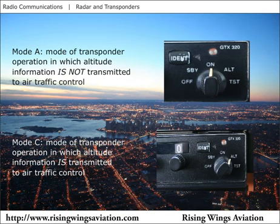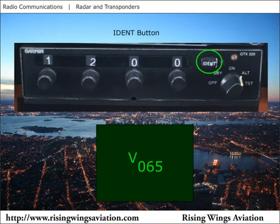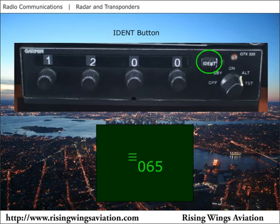The phrase "squawk standby" is an instruction to place the transponder in the standby position, in which case it will not reply to air traffic control radar. When the pilot presses the IDENT button on the transponder, the transponder sends an IDENT signal to the secondary radar system. The radar display momentarily changes the look of the secondary radar target, allowing the air traffic controller to verify the location of an aircraft. Press the IDENT button when requested to do so by air traffic control — for example, "Cardinal 42 Papa, IDENT."